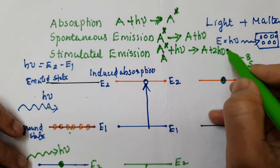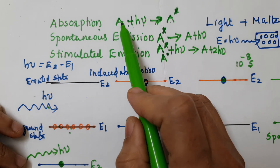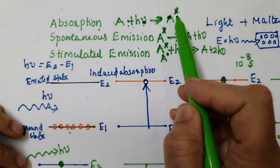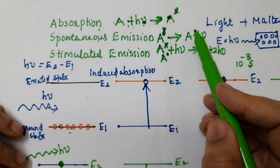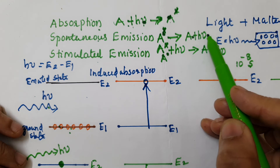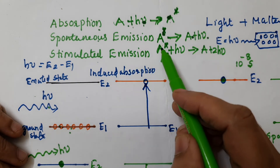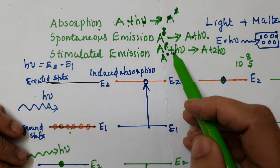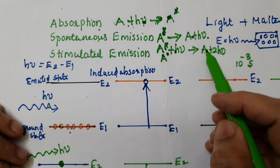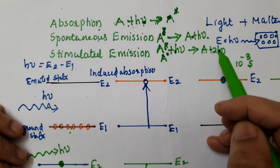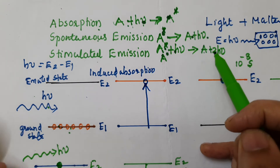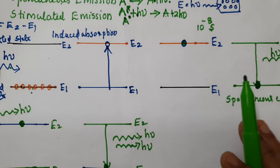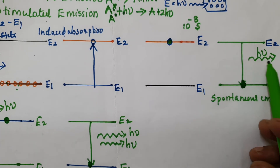In spontaneous emission, the excited atom spontaneously goes to the ground state emitting hν. In stimulated emission, the excited atom is triggered by an external hν photon and goes to the ground state emitting 2hν — so instead of 1 hν, it becomes 2 hν. In spontaneous emission the process is random and uncontrolled, so the light waves may not be coherent.